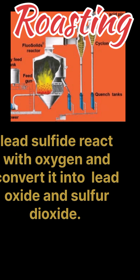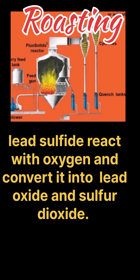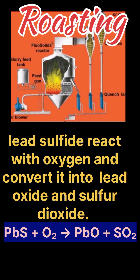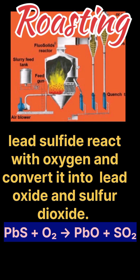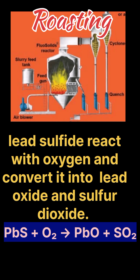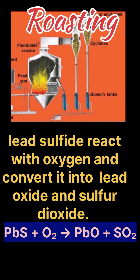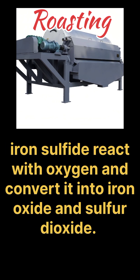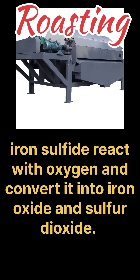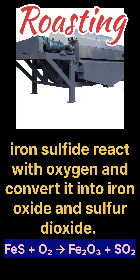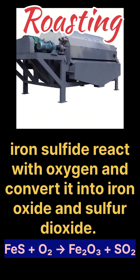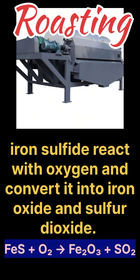Lead sulphide reacts with oxygen and converts into lead oxide and sulphur dioxide: PbS + O₂ → PbO + SO₂. Iron sulphide reacts with oxygen and converts into iron oxide and sulphur dioxide: FeS + O₂ → Fe₂O₃ + SO₂.